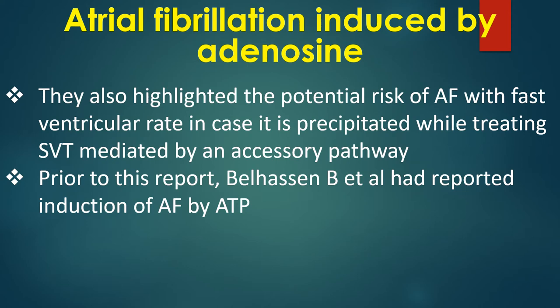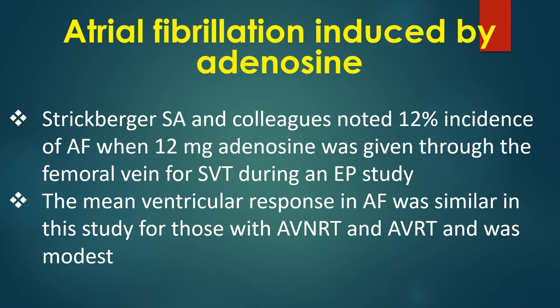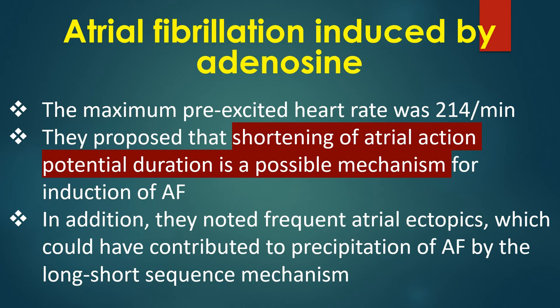Prior to this report, Belhassen and Associates had reported induction of AF by ATP. Strickberger and colleagues noted a 12% incidence of AF when 12 mg adenosine was given through the femoral vein for SVT during an EP study. The mean ventricular response in AF was similar for those with AVNRT and AVRT and was modest.